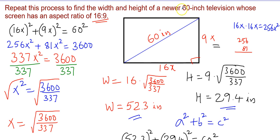So given a television with a diagonal size of 60 inches and an aspect ratio of 16 to 9, the width of the screen is 52.3 inches and the height is 29.4 inches.